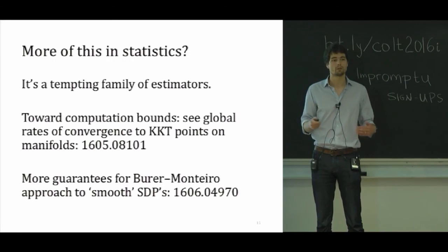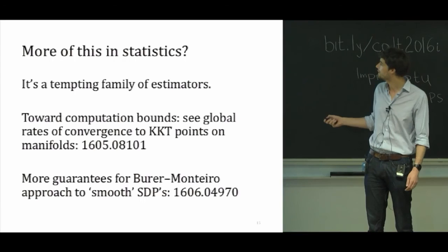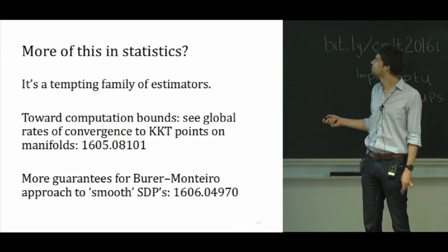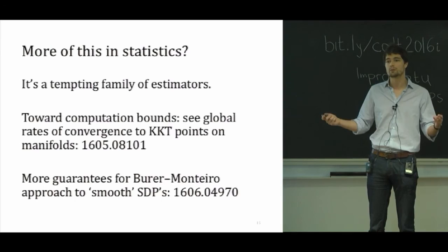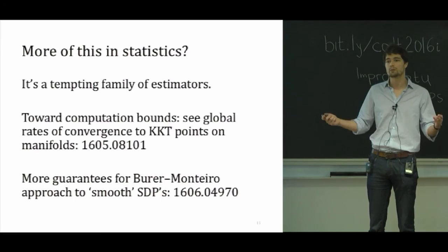You can actually do this even if you only compute a point that only approximately satisfies KKT conditions which might be useful for establishing computation bounds for which we'll need more work on computational complexity of optimization on manifolds. This is a start and if you're interested in solving semidefinite programs using this Burer-Monteiro low-rank approach, I'd like to advertise this work which is with the same collaborators as here where we actually look at how you can get all the way to the global optimizer of the SDP. Thank you.